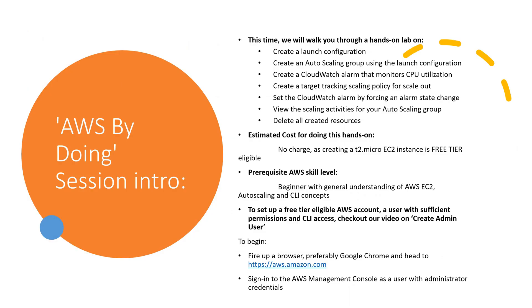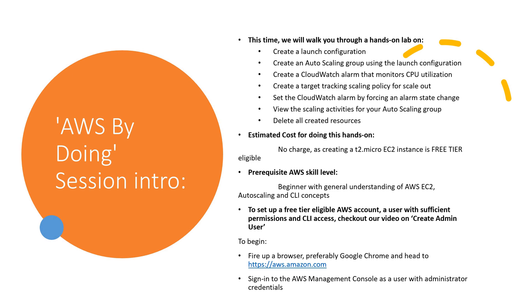This time, we will walk you through a hands-on lab on: create a launch configuration, create an auto scaling group using the launch configuration, create a CloudWatch alarm that monitors CPU utilization, create a target tracking scaling policy for scale out, set the CloudWatch alarm by forcing an alarm state change, view the scaling activities for your auto scaling group, and delete all created resources.